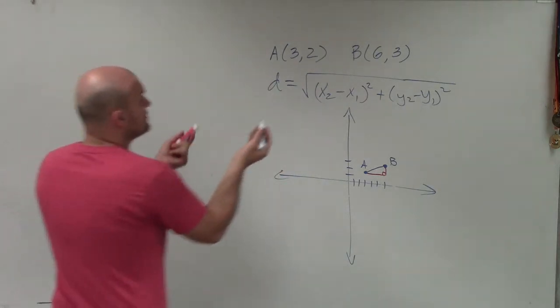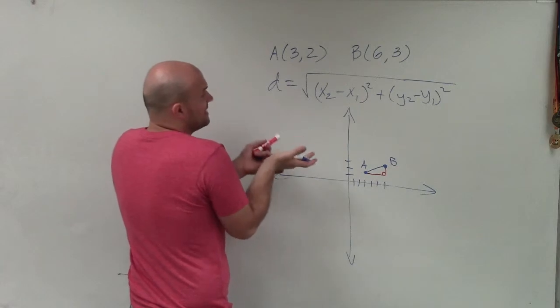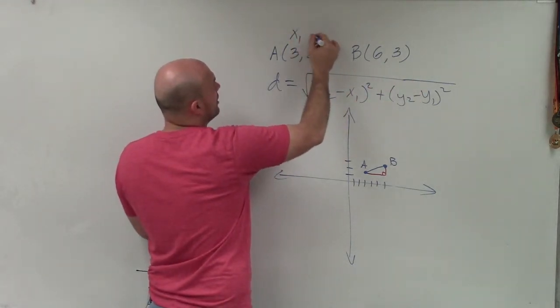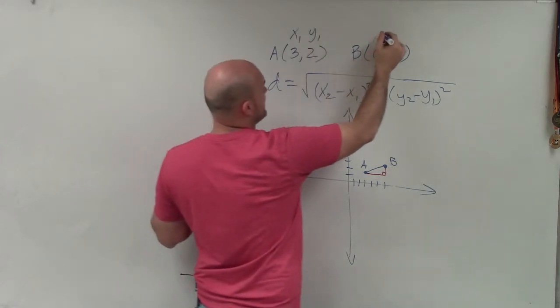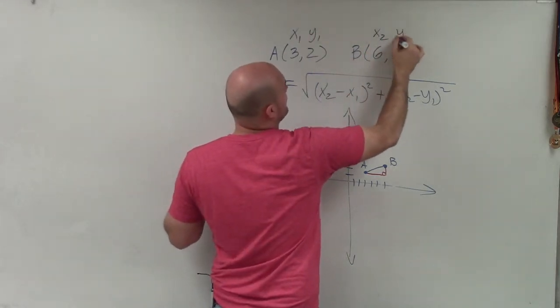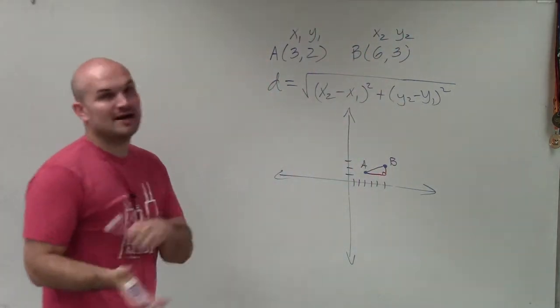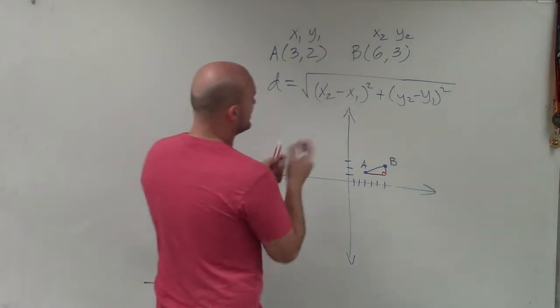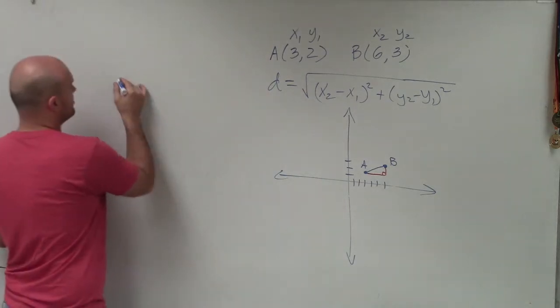So to do that, the first thing I need to do is label these points A and B as x2, x1, y2, and y1. So I'll call this point my first point, x1, y1, and this one my second one. And it doesn't really matter if you flip them, you label them the other way. Now all I'm going to do is enter that information into the formula.